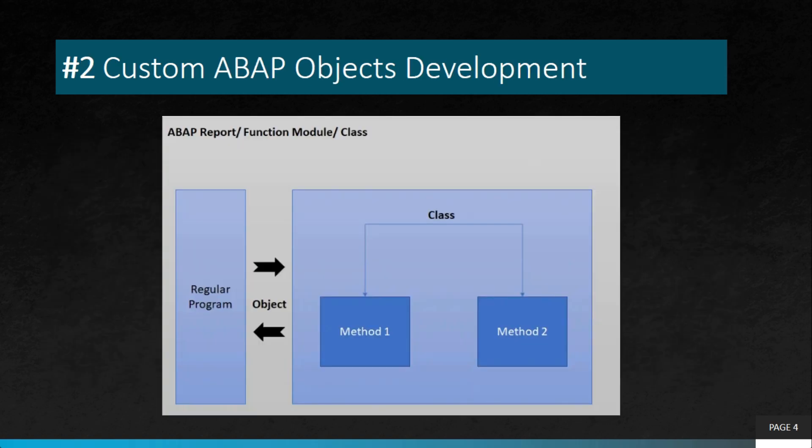The next development is custom ABAP object development. Developers can use ABAP objects to create custom SAP applications. ABAP objects provide a modern, modular, and maintainable approach to application development. Developers can use ABAP objects to encapsulate business logic, and these objects can be reused in multiple ways — an object can be called from a report, from an OData service, or from a CDS perspective. All these functions and modules can call an object and reuse it as per demand.